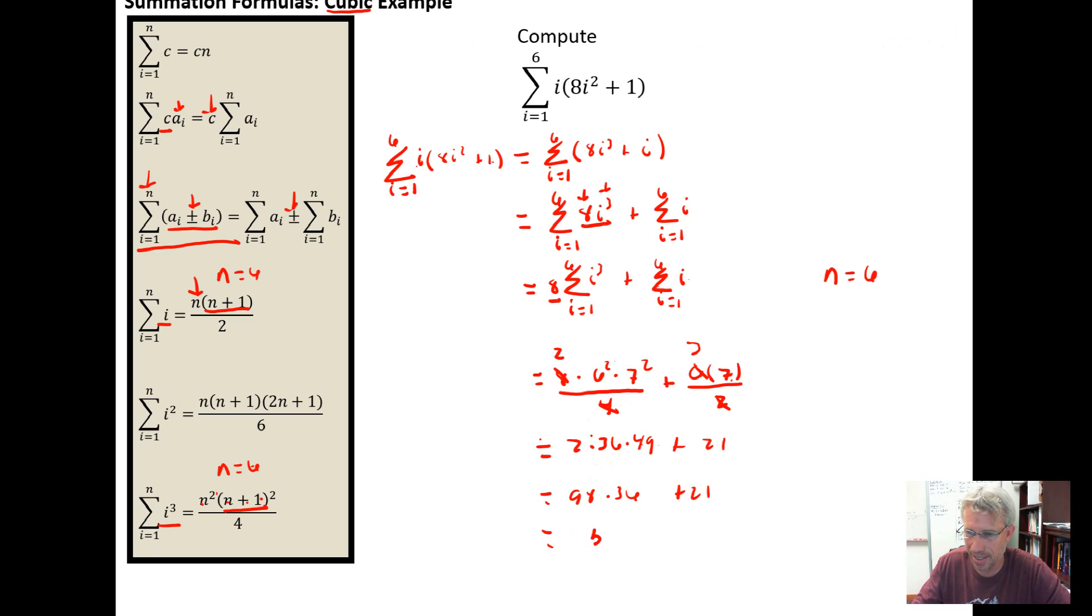It's going to be 3528 plus 21, which is just going to be 3549 for our indicated sum.